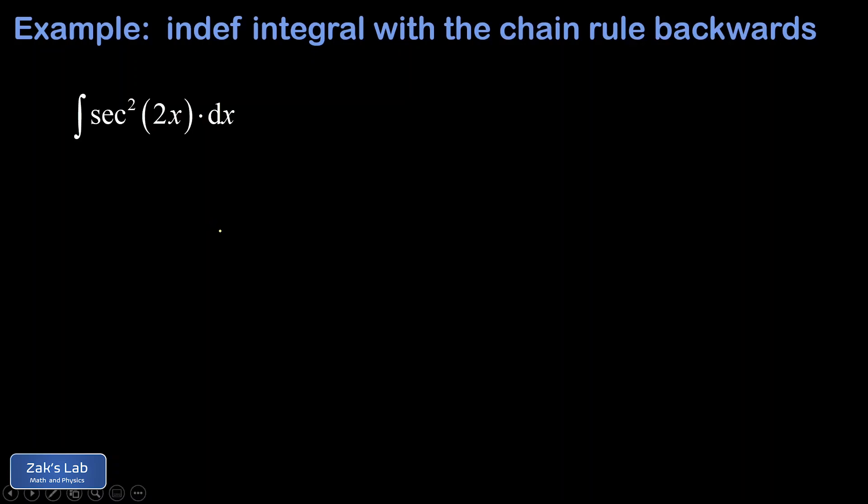In this video, we're computing the indefinite integral of secant squared 2x. So the main point of this integral is that we're going to have to grapple with the chain rule backwards. And that's because this is a function composition where 2x is the interior function.